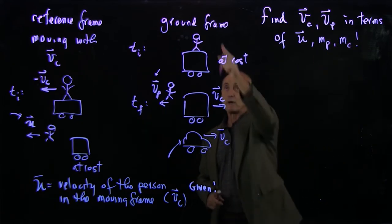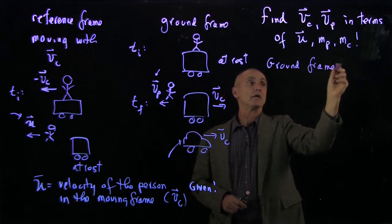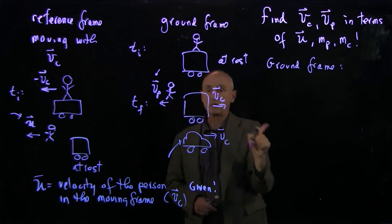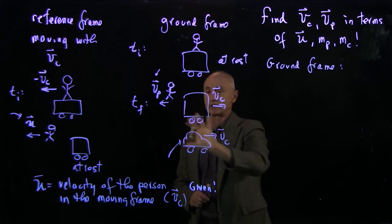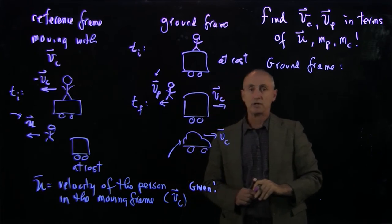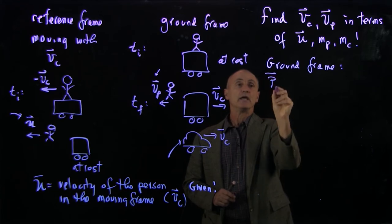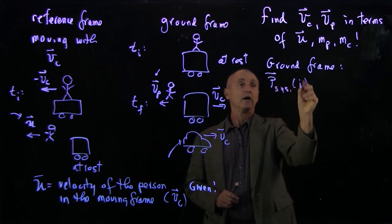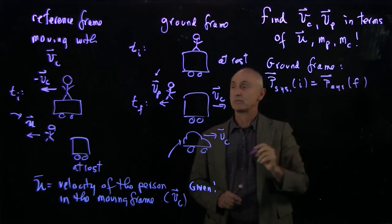Now we'll use the ground frame first. And our assumption here is that the person jumped horizontally and that there are no external forces in the horizontal direction. So all of the vectors we've drawn are horizontal, and there's no external forces in the horizontal direction. Then we know that the initial momentum of the system is equal to the final momentum of the system.